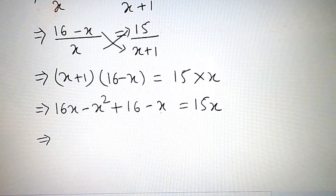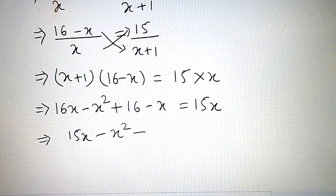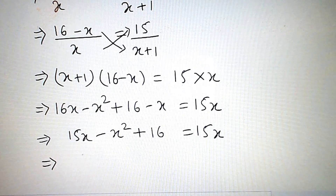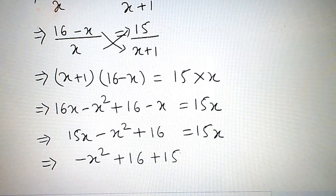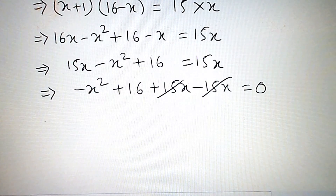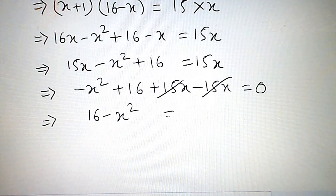Now, 16x minus x — we subtract x. So, 15x minus x squared plus 16 is equal to 15x. Now, minus x squared plus 16 plus 15x, and minus 15x, so they cancel out. Then we get 16 minus x squared is equal to 0.